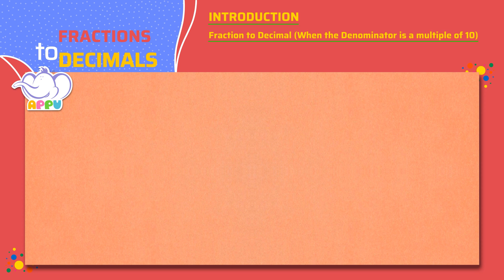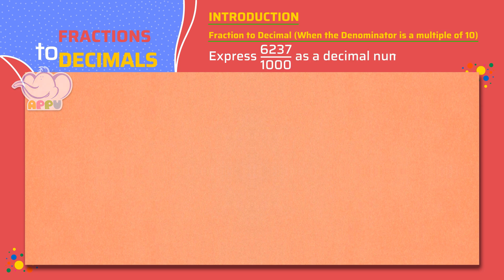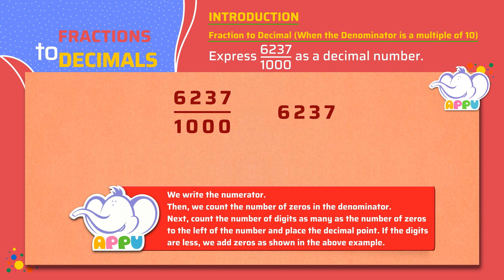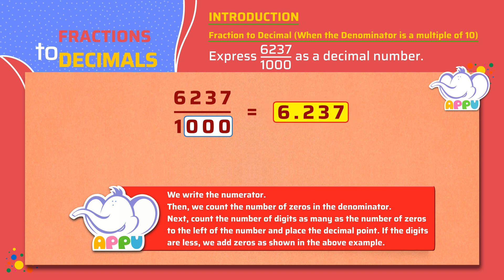Let's look at converting a fraction with 1000 as the denominator to a decimal number. For example, express 6237 by 1000 as a decimal number. We write the numerator — that is 6237. We count the number of zeros in the denominator — that is we have three zeros. Now we count three digits to the left of the number and place the decimal point, that is before 2. So the answer is 6.237.